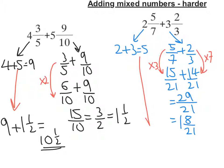So the last thing I need to do is bring down my 5 and my 1 and 8 twenty-firsts, and that will give me 6 and 8 twenty-firsts.